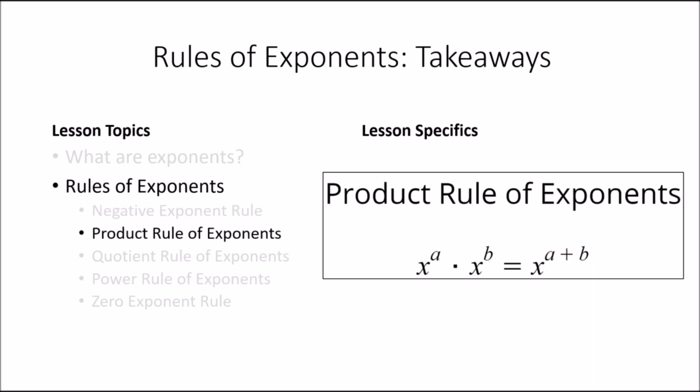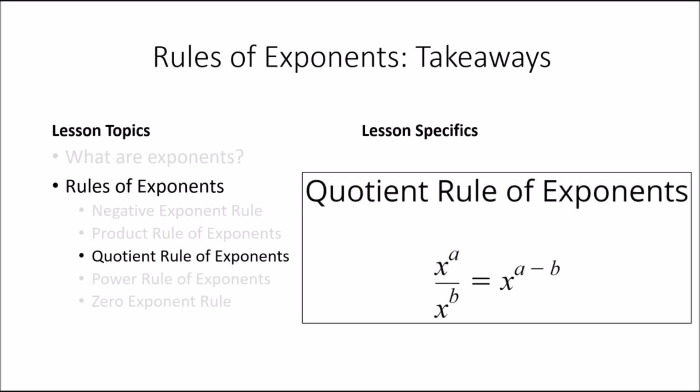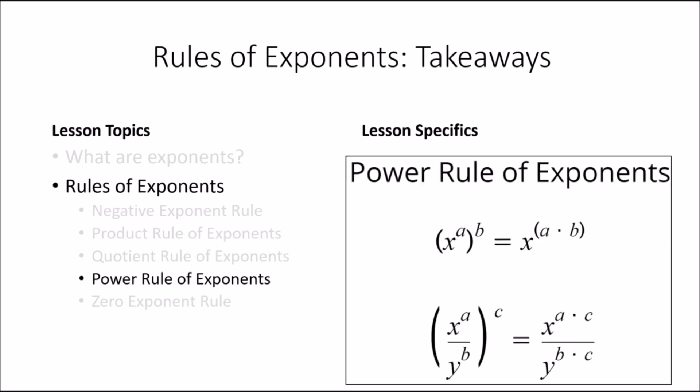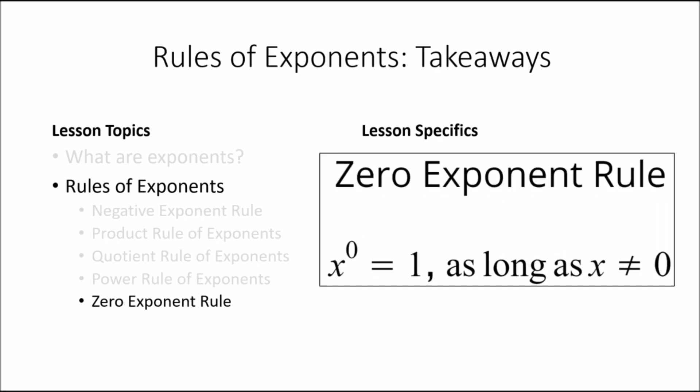The next rule was the product rule of exponents: we can add together exponents of exponential terms that are multiplied together as long as they have the same base. The next rule was the quotient rule of exponents: we can subtract exponents of exponential terms that are being divided as long as they have the same base. The next rule was the power rule of exponents: we can multiply exponents together. Finally, we had the zero exponent rule: for any number other than a base of zero, a number raised to the exponent zero is equal to one. Feel free to review this lesson again anytime.